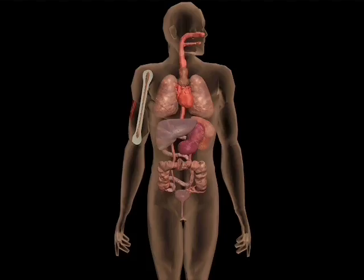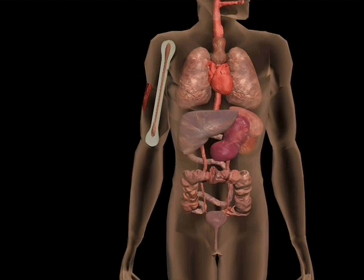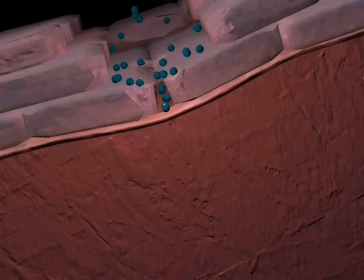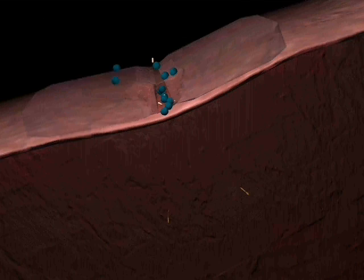Another possible route of entry for bacteria is through broken skin. For example, C. tetani, the causative agent of tetanus. A bacterial colony could become established following a wound. The bacteria multiply and release toxins into the surrounding tissue.